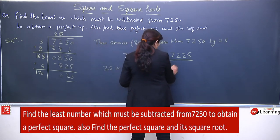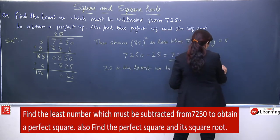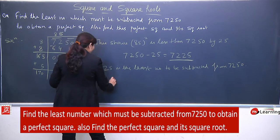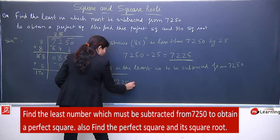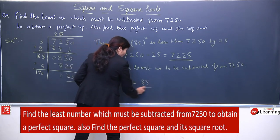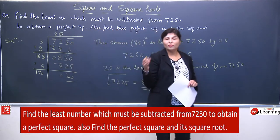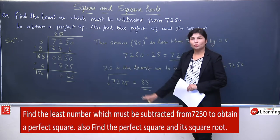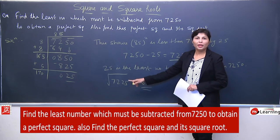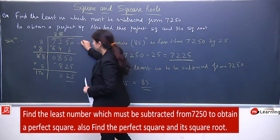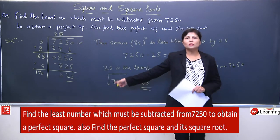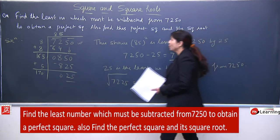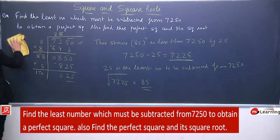After subtraction, answer is 7225. Iska square root nikaalenge — obvious hai, 85 aayega. Long division method ya prime factor method se solve karke bata sakte hain. Remainder 0 aana chahiye. Is question mein 25 extra tha — it was the least number which should be subtracted from 7250 to make it a perfect square. Ye type ke questions least aur greatest wale exam mein aate hi hain.